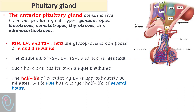The anterior pituitary gland contains five hormone-producing cell types: gonadotrophs secrete gonadotropins, lactotrophs secrete prolactin, somatotrophs secrete growth hormone, thyrotrophs secrete TSH, and adrenocorticotrophs secrete ACTH. FSH, LH, TSH, and HCG are glycoproteins composed of alpha and beta subunits. The alpha subunit is identical across all four, while the beta subunit is specific to each hormone.